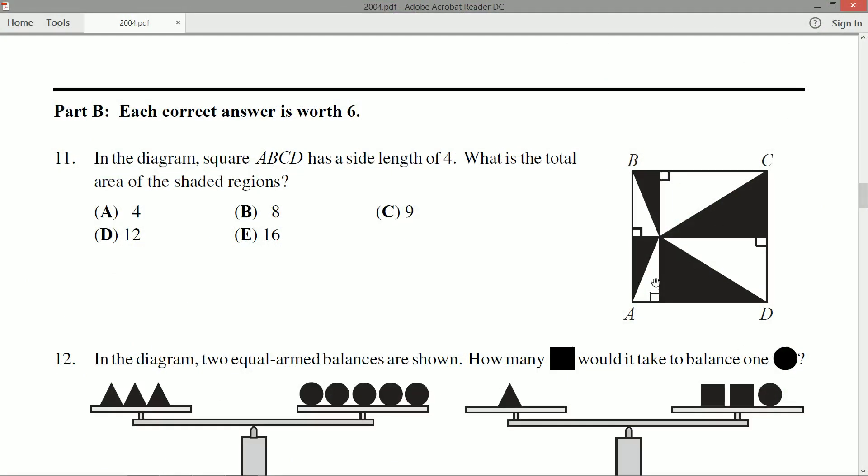It's got a very interesting looking diagram here. In the diagram, square ABCD has a side length of 4. What is the total area of the shaded regions, these blacked out regions? So I noticed that we've got a bunch of right angles here, and that's kind of key to this question.